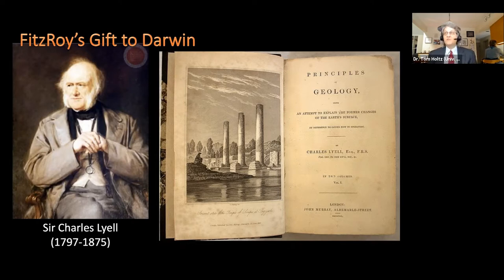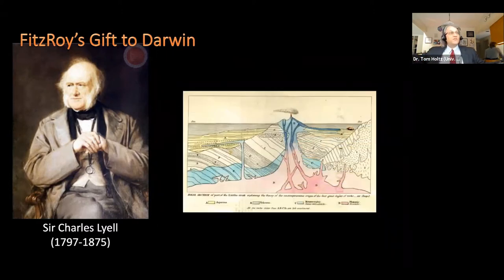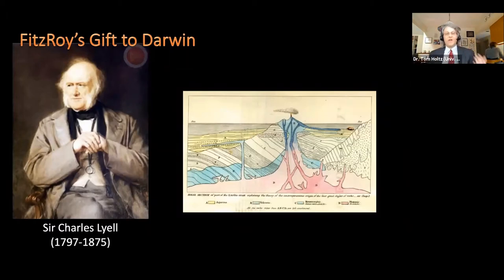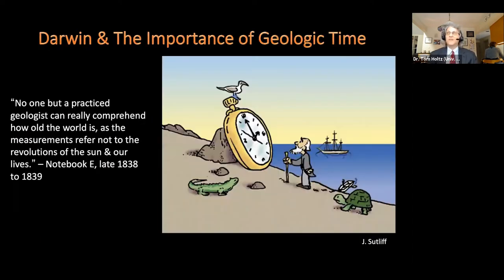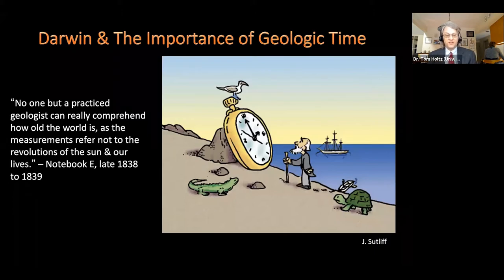FitzRoy himself was a scientist — a meteorologist, and actually the founder of the concept of the weather forecast; he even coined the word 'forecast.' FitzRoy gave Darwin as a gift, when he arrived on the Beagle, a copy of the first volume of Charles Lyell's Principles of Geology — a foundational document in the history of geology. It's the strongest and most complete argument up to that point for uniformitarianism: understanding that geological structures like mountain ranges and strata are products of the same forces we see operating today, extrapolated over vast periods of time. Lyell became a close friend of Darwin's later. Darwin recognized the importance of vast geologic time: 'No one but a practiced geologist can really comprehend how old the world is.'